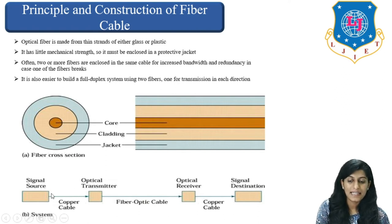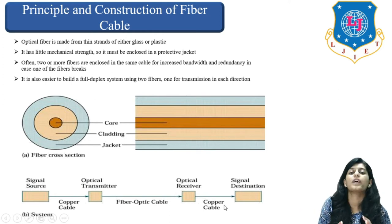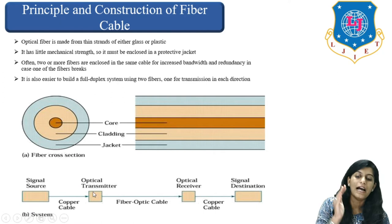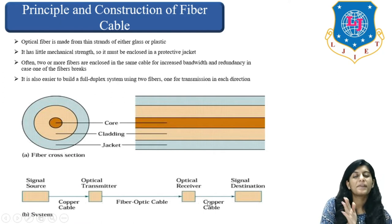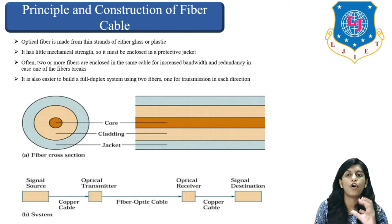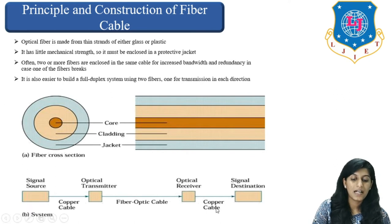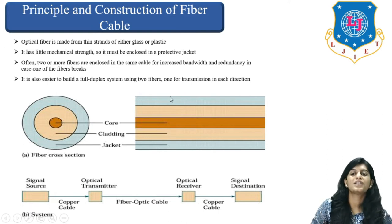From signal source to optical transmitter we can use copper wire or copper cable. From optical transmitter to optical receiver we need fiber optic cable — when the word 'optical' is used, we must use fiber optics. From optical receiver onward we can again use copper cable to transmit the signal to the signal destination.